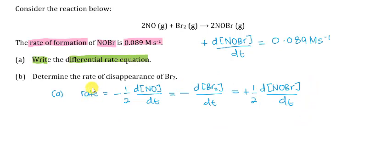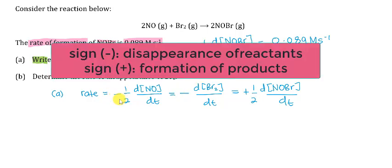This is our differential rate equation. Don't forget to write the rate and also the sign for each reactant and product. Reactants will decrease with time — we use a negative sign. Products will increase with time — we use a positive sign.